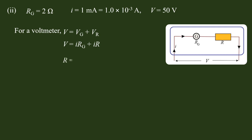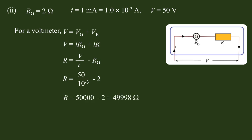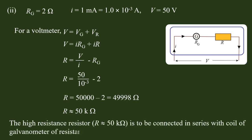The multiplier resistor R is equal to V divided by i_g minus R_g. The value of V divided by i_g gives R equal to 49,998 ohms. The high resistance R equal to approximately 50,000 ohms is to be connected in series with the galvanometer coil of resistance R_g.